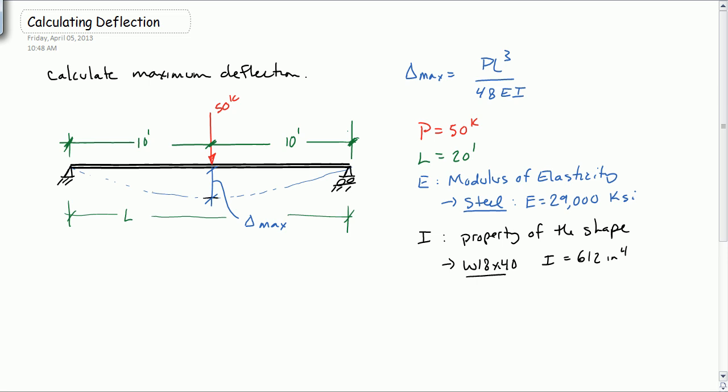Now, before we just start plugging these into the equation, we need to look at a few things. Let's look at the units here. We have kips, we have feet, we have kips per square inch and inches to the fourth. For these problems, because your deflection is something we usually calculate in terms of inches, so we usually want this to be in inches, we want to get everything over here with consistent units. So what I recommend is you convert your feet to inches right away. So 12 inches per foot times 20 feet is 240 inches.